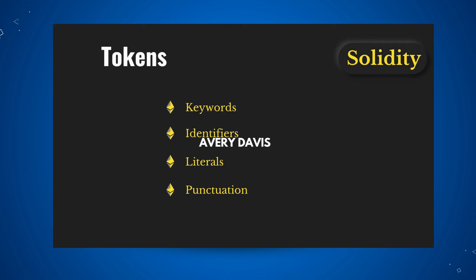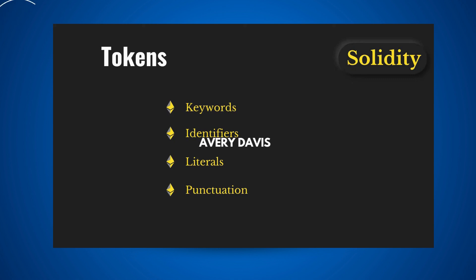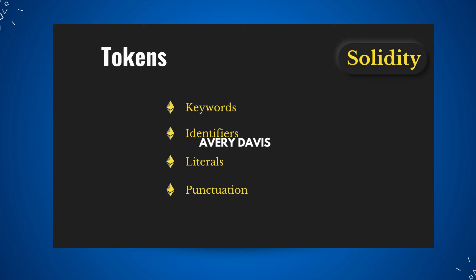The third component is literals — a data type you define in your smart contract, such as numbers, strings, and booleans. These are important things that come up in interviews: the interviewer will ask what is a literal in Solidity, what is an identifier, what is a keyword. The fourth component is punctuation, which represents the symbols used in Solidity programming. If you've coded in JavaScript, you'll find the exact same structure — the same colons, semicolons, and brackets used in Solidity smart contracts.